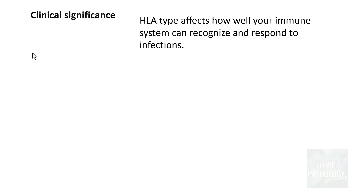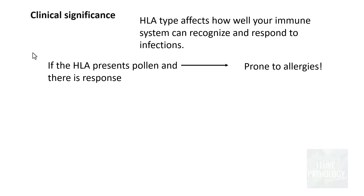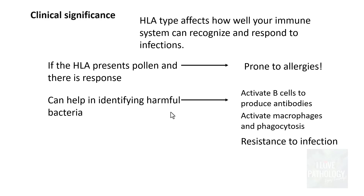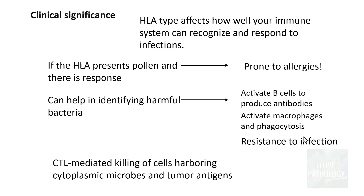Now having studied the structure of MHC/HLA molecules, let's consider their clinical significance. HLA affects the immune system by recognizing and responding to infections. For example, if HLA presents pollen and triggers a response, those individuals may be prone to allergies. The most important function is HLA's role in identifying harmful bacteria, activating B cells to produce antibodies, activating macrophages to carry out phagocytosis, and providing resistance to infections. In the case of class 1 molecules, cytotoxic T lymphocyte-mediated killing of cells harboring cytoplasmic microbes and tumor antigens also occurs.